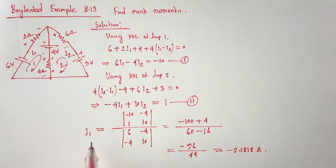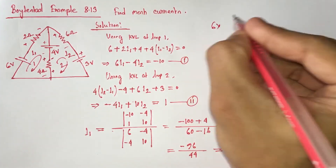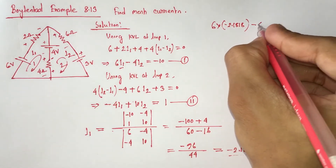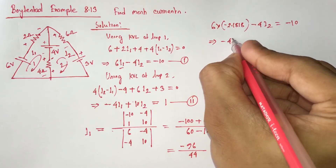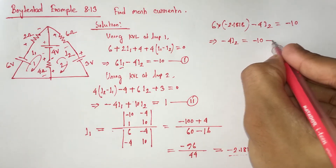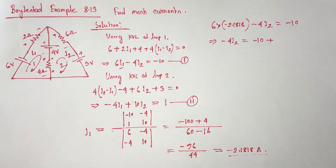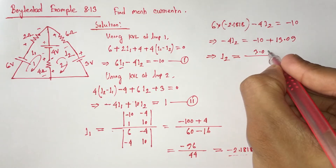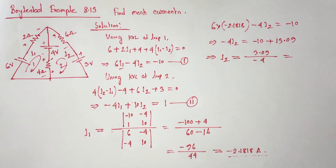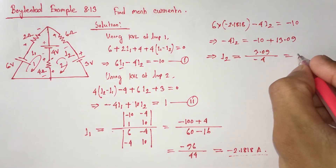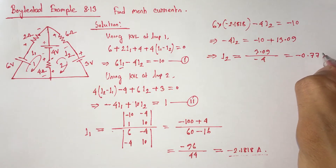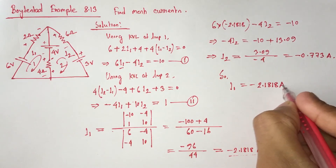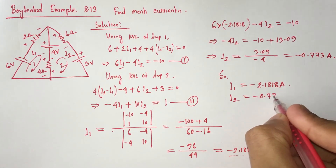Now, using the value of I2 equals minus 2.1818 in equation 1, we get minus 4I1 equals minus 10, so minus 4I1 equals 3.09, and dividing by minus 4, I1 equals minus 0.773 ampere. So we get I1 equals minus 2.1818 ampere and I2 equals minus 0.773 ampere.